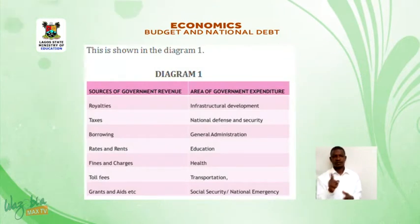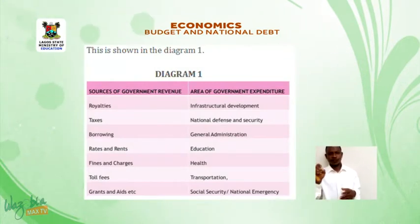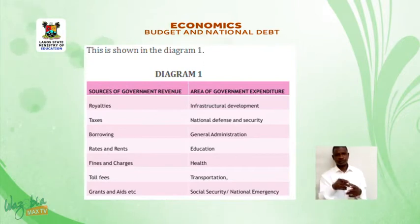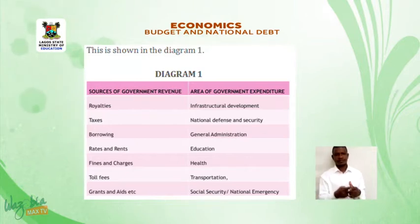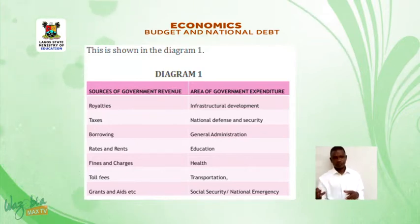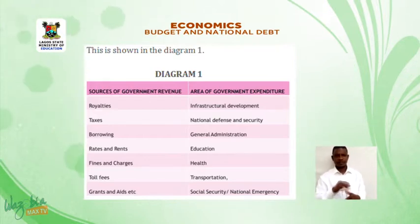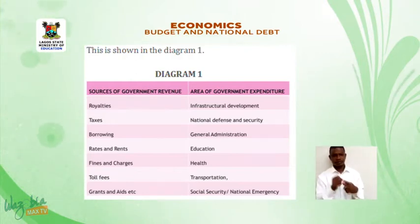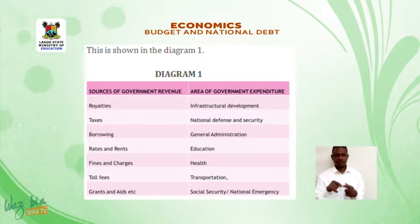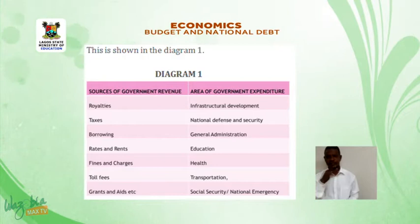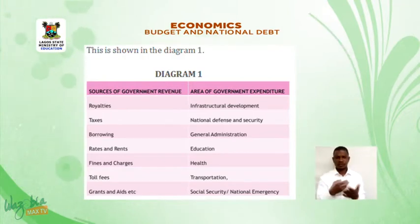As shown in Diagram 1, sources of government revenue include: national revenue, royalties, borrowing, taxes, rates and rent, fines and charges, toll fees, grants and aid, etc. Areas of government expenditure include: infrastructure development, security and national defense, general administration, education, health, transportation, social security and emergencies, etc.